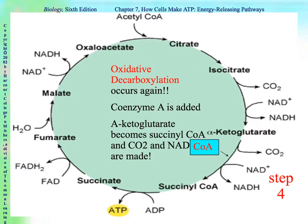In step four, oxidative decarboxylation occurs again. This time, coenzyme A is added and carbon dioxide leaves. The hydrogen gets added to NAD+ to make NADH. And alpha-ketoglutarate, which was a five-carbon molecule, turns into succinyl coenzyme A, which is a four-carbon molecule.